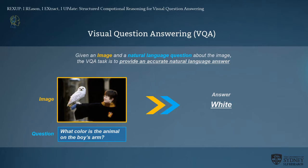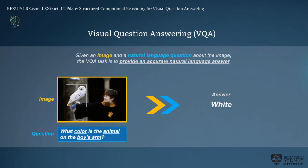Visual question answering (VQA) is one of the most popular vision and language tasks. Based on a given image and a natural language question about the image, the VQA task is to provide an accurate natural language answer. For example, given an image with Harry Potter and Hedwig, and the question 'what color is the animal on the boy's arm,' the machine focuses on detected objects like animal and boy from the image, aligned with the words color, animal, boy, and arm from the question to produce the answer 'white.' The basic idea of VQA is really simple.